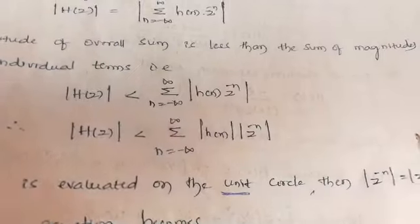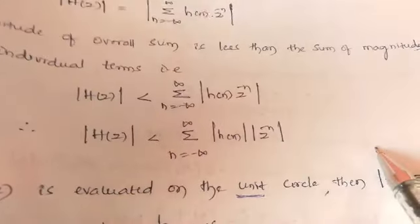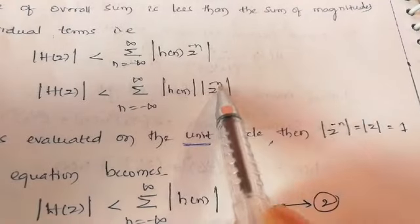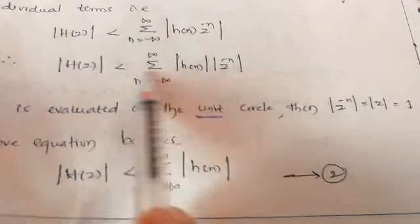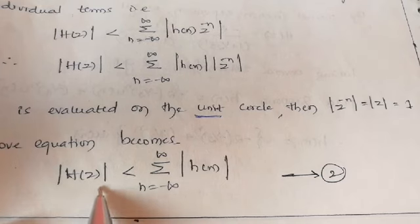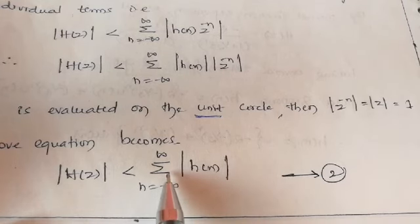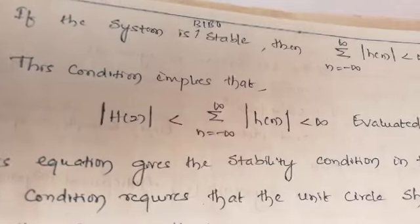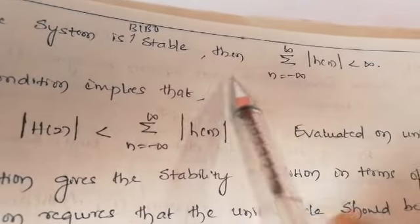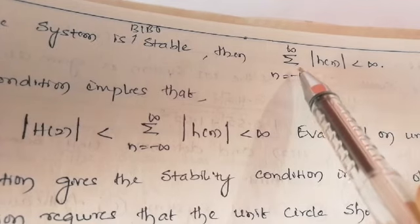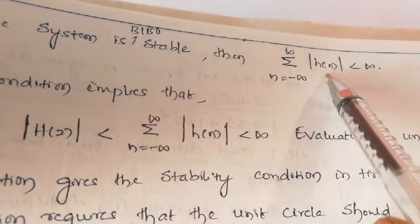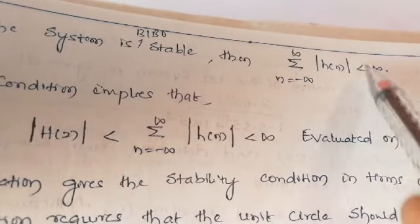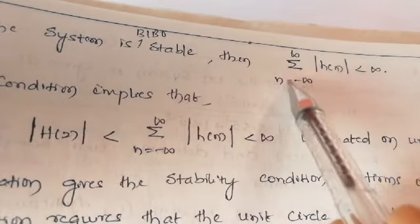H(z) is evaluated on the unit circle. The unit circle means radius is 1, that is |Z| equal to 1. When |Z| equals 1, the term |Z to the power minus n| becomes 1, so the equation becomes |H(z)| less than summation from minus infinity to plus infinity of |H(n)|. Hence the system is BIBO stable if it satisfies the condition that summation of |H(n)| is less than infinity.